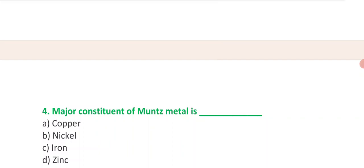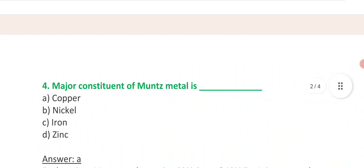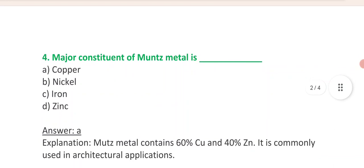Fourth question is: the major constituent of the Muntz metal is - option A copper, option B nickel, option C iron, option D zinc. And answer is A, copper.